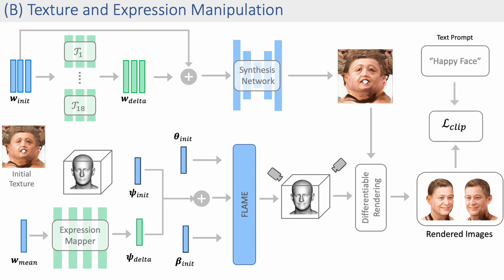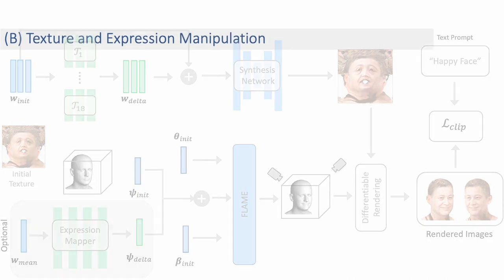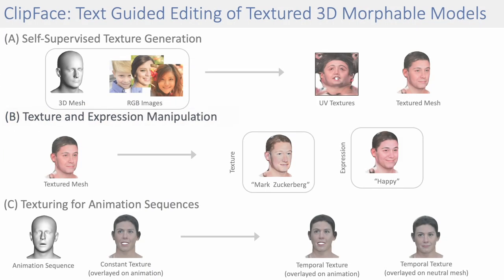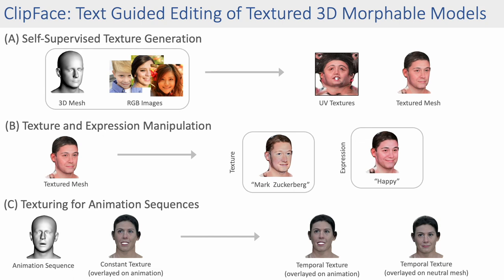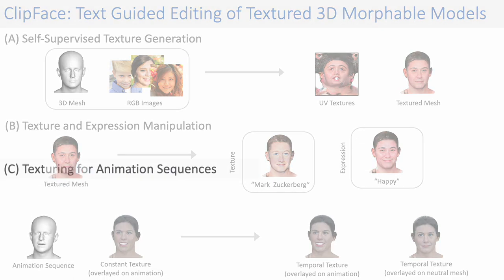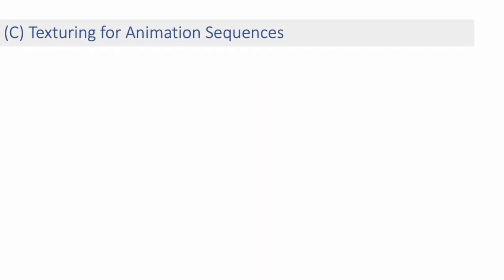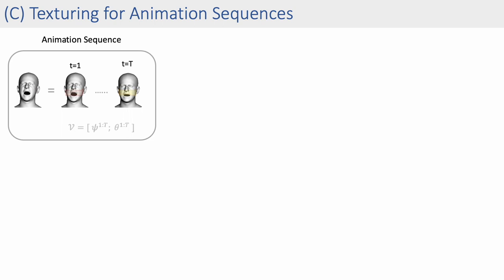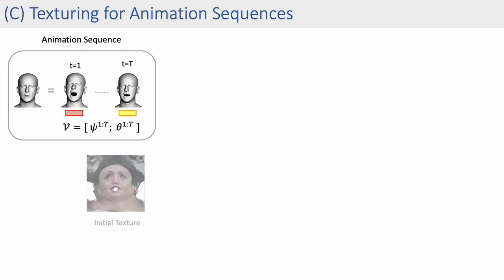We can additionally manipulate only texture by using a frozen expression mapper. Our approach also enables generating temporally varying textures of an animated 3D face from a driving video sequence and a text prompt.